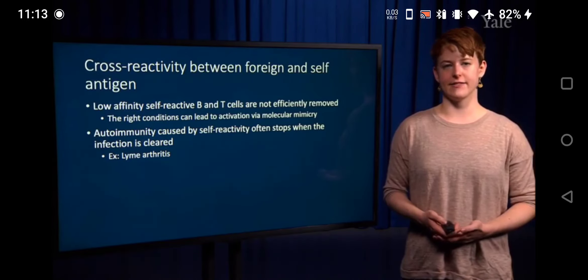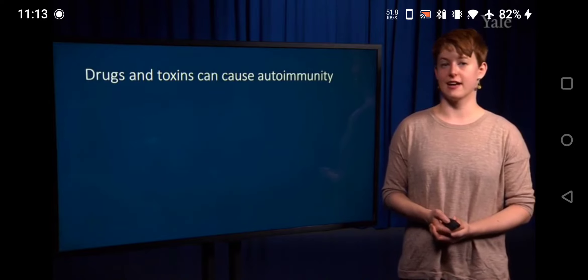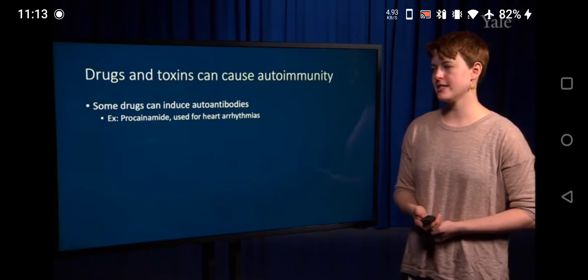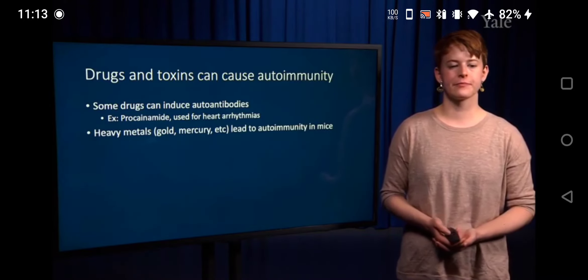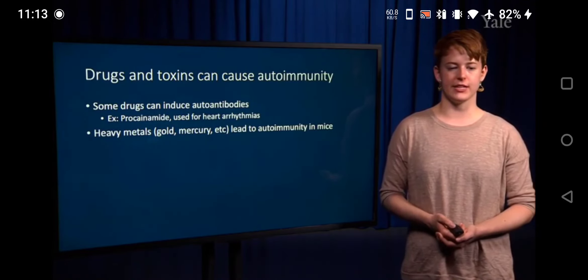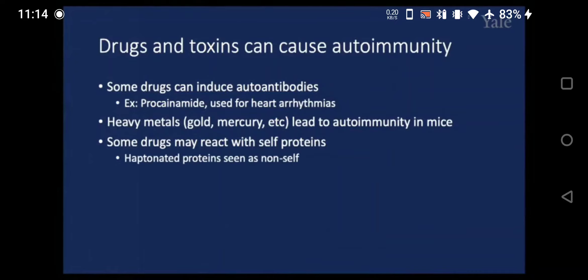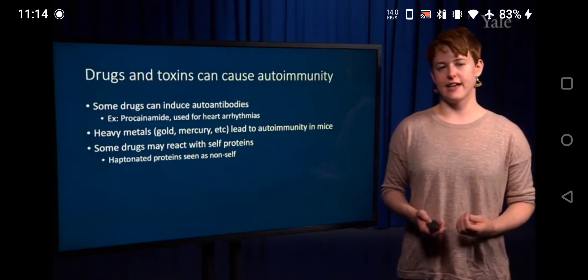Drugs and toxins can also cause autoimmunity. Some drugs can induce autoantibodies — one drug used for heart arrhythmias was known to cause this, though it is typically no longer prescribed due to this risk. Heavy metals such as gold or mercury can lead to autoimmunity in mice, although this is not well understood in humans. Some drugs may actually react with self-proteins, leading to a haptinated self-protein — the immune system may no longer recognize it as self and may mount an immune response to that new hapten region.